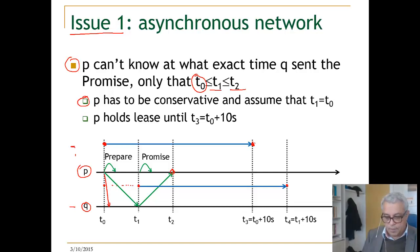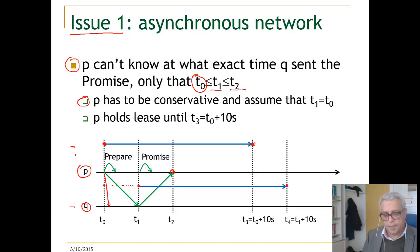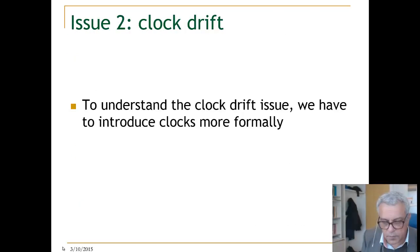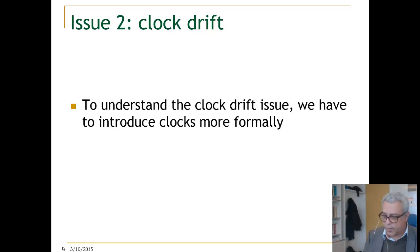Because of the asynchronous nature of communication, P actually holds the leader lease for a shorter period than would have been possible if the communication time were known a priori. The second issue is clock drift, and we will leave that to the next unit.